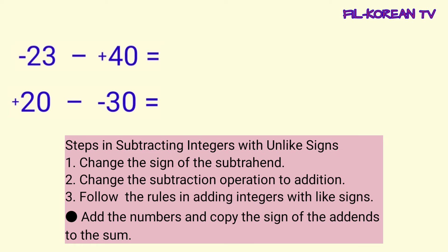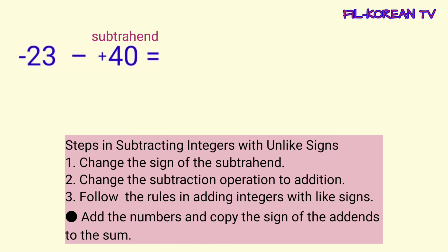Okay, sagutin natin yung problems. Yung una, negative 23 minus positive 40. Dito, ang subtrahend ay positive 40. Ang gagawin natin, papalitan natin ang sign — itong positive, gagawin nating negative. Kaya, itong positive 40 ay magiging negative 40.